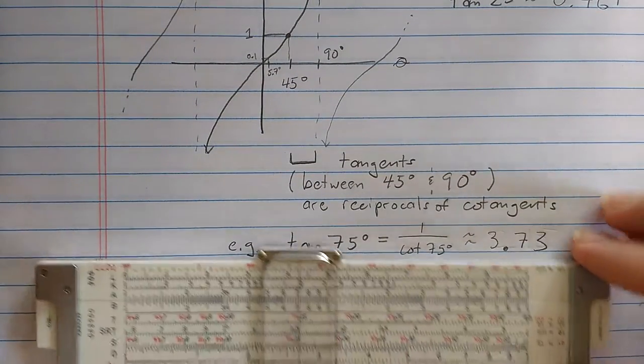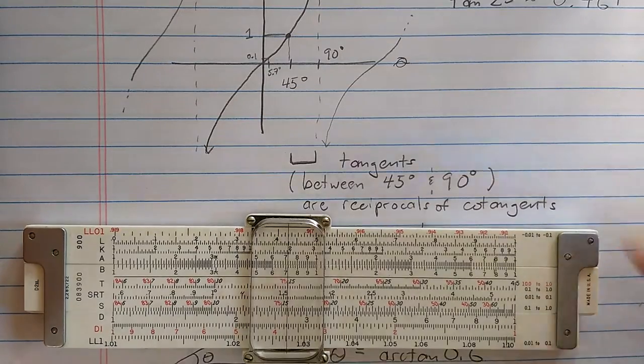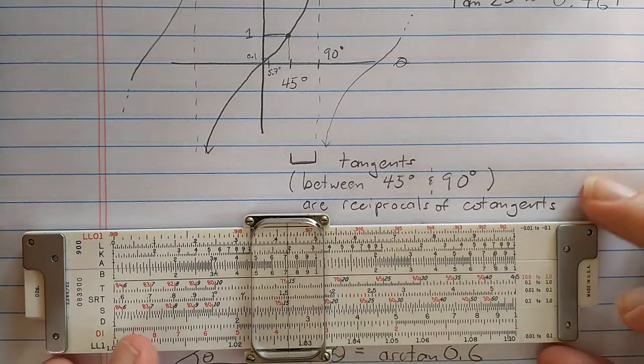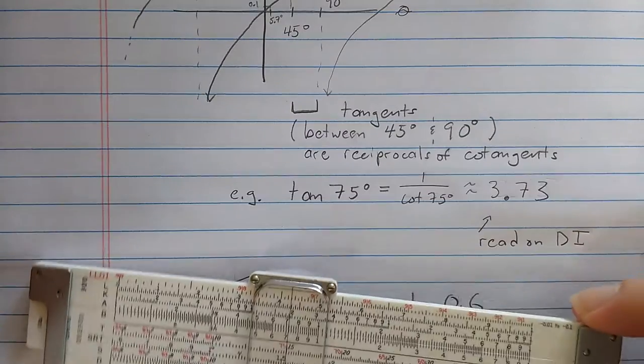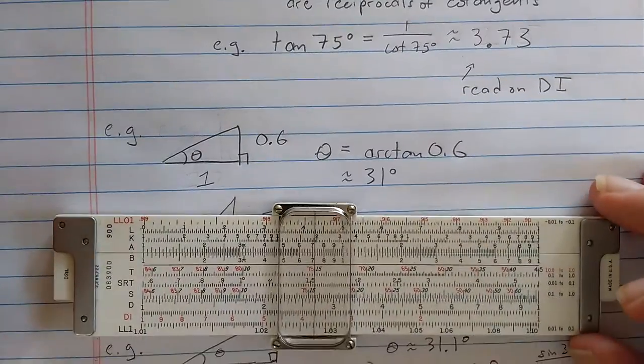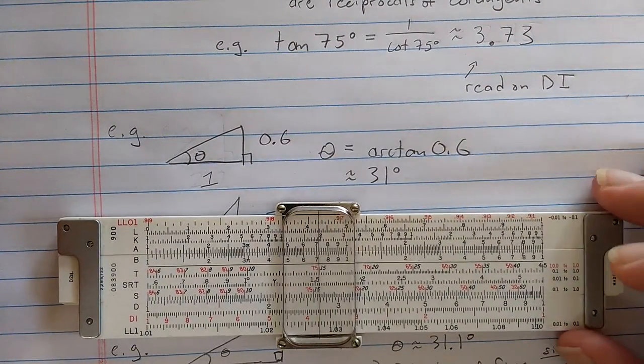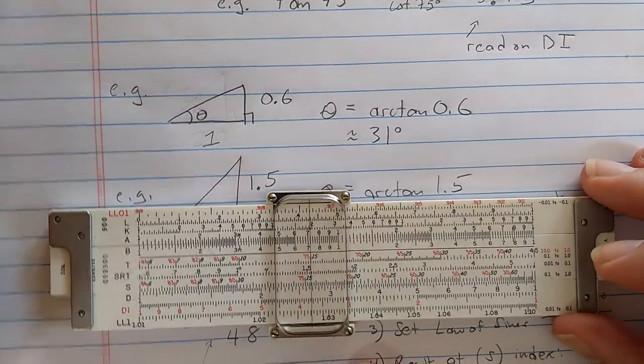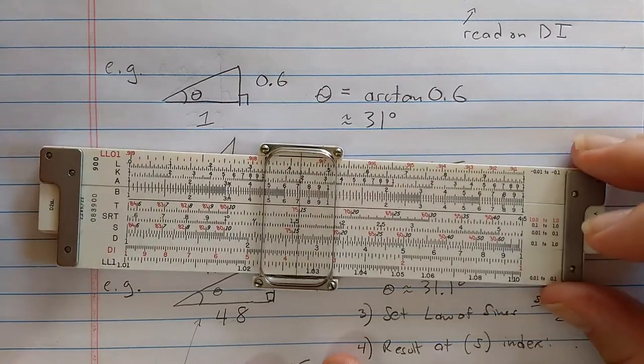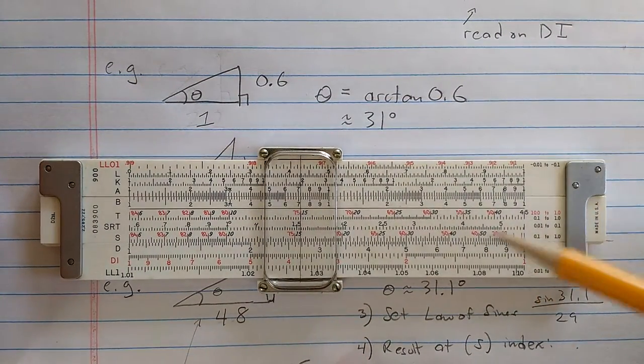Now the reason for having the T scale, even on the basic slide rules, is not really for just direct computation of tangent, because on a basic slide rule you could do that by dividing sines, for example. The real reason is for computing angles, so doing the operation in reverse.